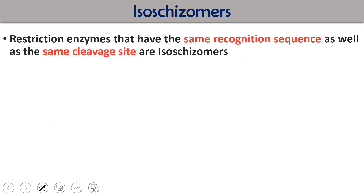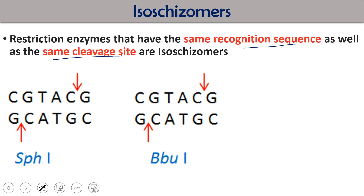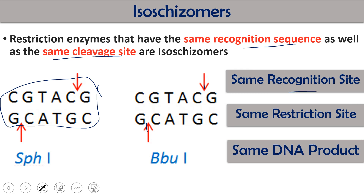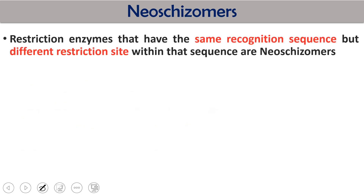There are three specific terms used when talking about restriction enzymes. The first is isoschizomers: those restriction endonucleases which have the same recognition sequence and the same cleavage site are called isoschizomers. For example, SphI and BbuI both recognize CGTACG and both cut between C and G. Same recognition site, same restriction site, and as a result they produce the same DNA product after digestion.